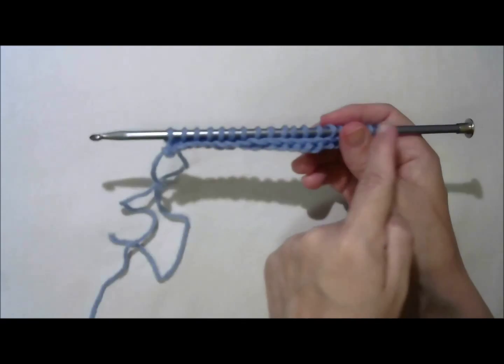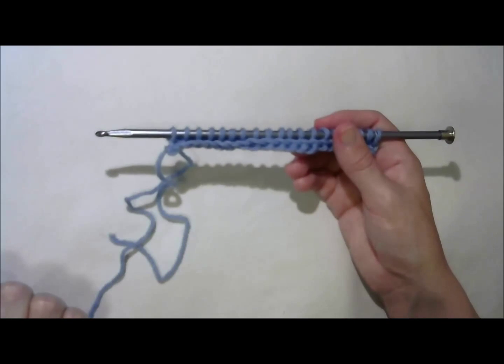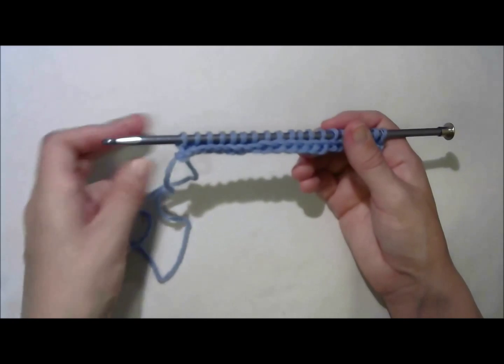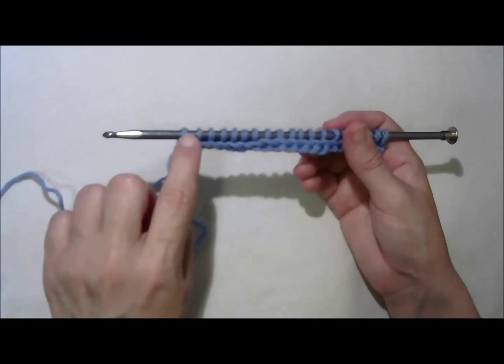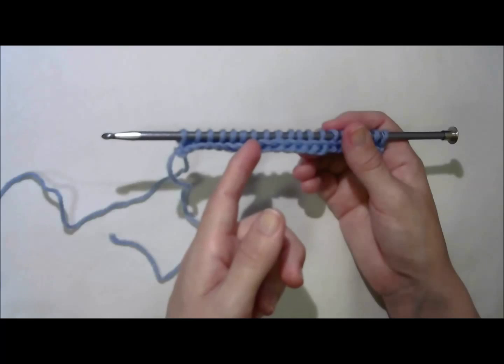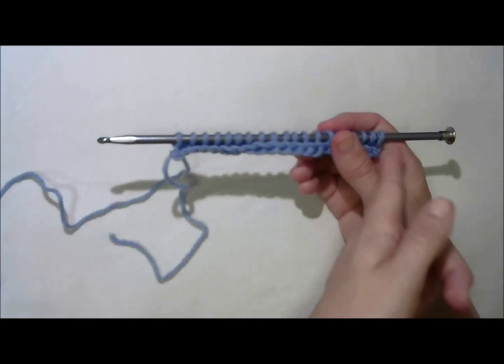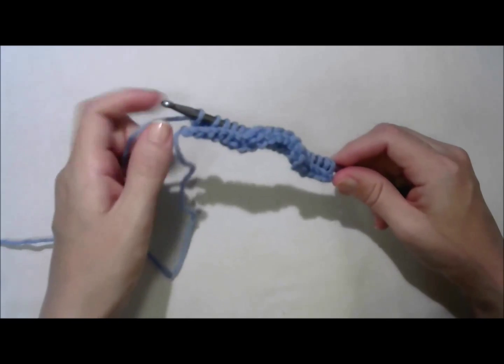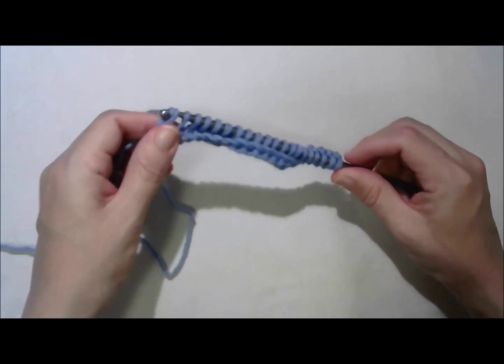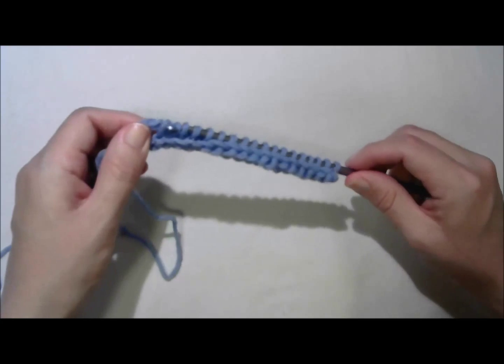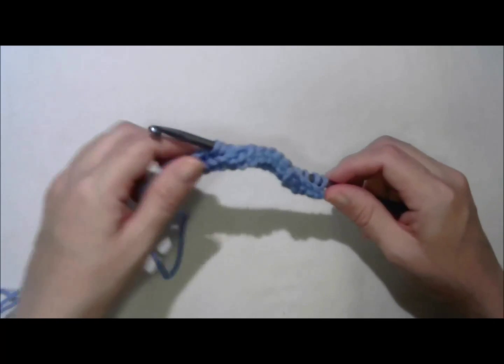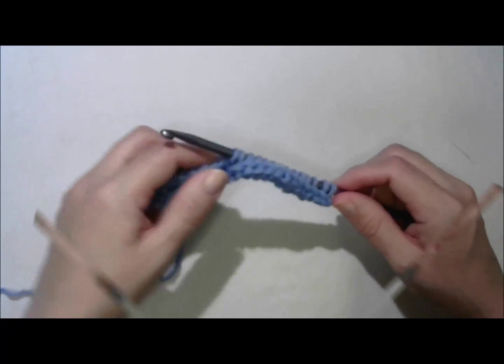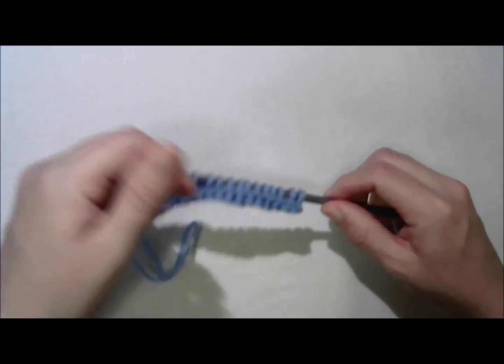That's the next forward pass. Forward passes are always working towards the left. Now we're going to make a return pass back towards my right hand. And they'll work the same way. Yarn over, draw through one to make the edge. Yarn over, draw through two loops. Yarn over, draw through two loops. Repeat. Back to your right hand.